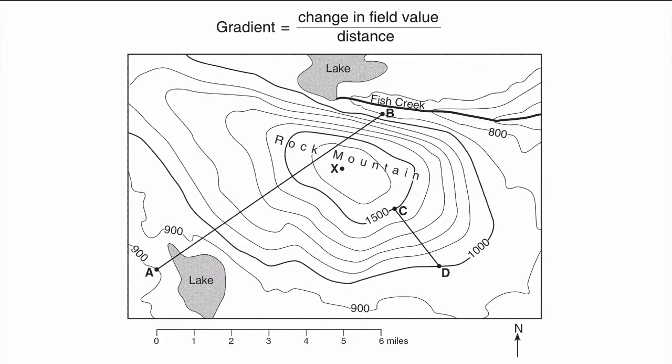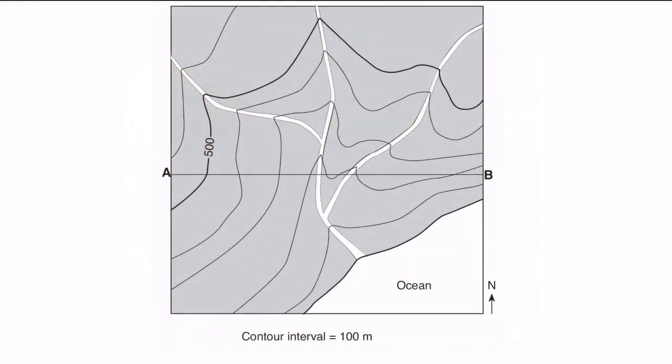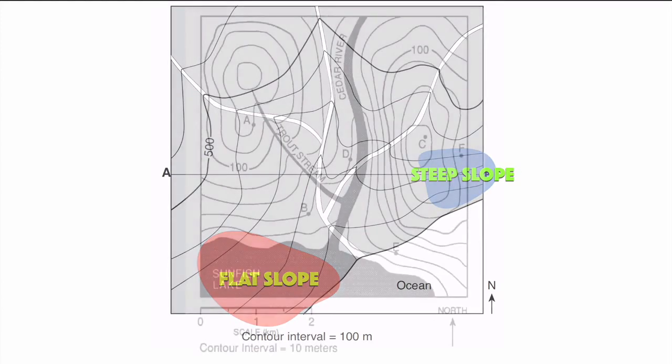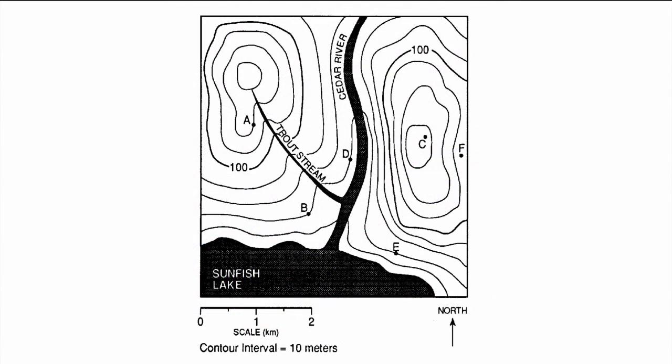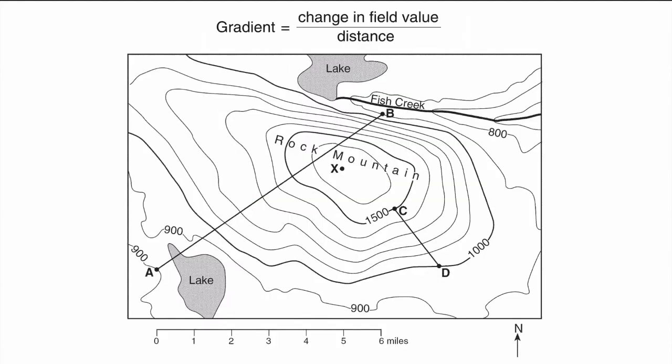If I were to look at this map carefully and look for any areas where the lines were close together like right here, based on the fact that the lines are close together, I know that the elevation is changing very quickly over a very short distance, as compared to somewhere over here. Another example: trying to pick out where the lines are closest together, that's probably somewhere around here. That's where my steep slope is. This looks like the area where the lines are the furthest apart.